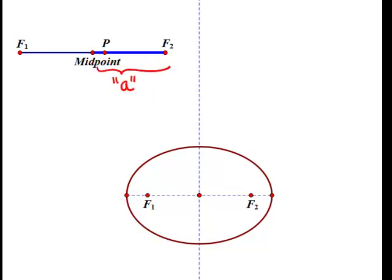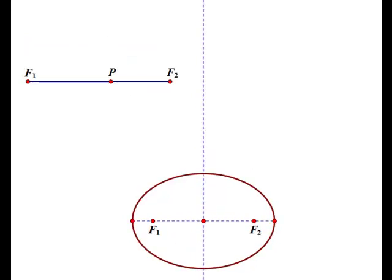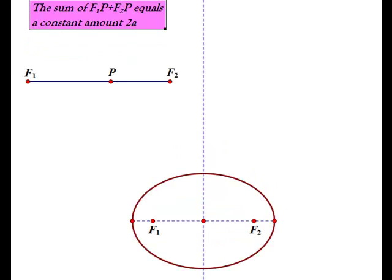So I'm going to first of all take half of the distance of the sum from f1 to p and f2 to p, and I'm going to call that distance a. If you notice from our diagram here that that distance is exactly the same as from the center of our ellipses to the end point of our major axis.